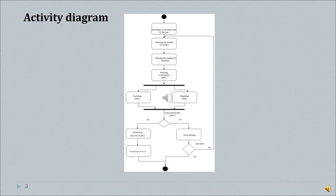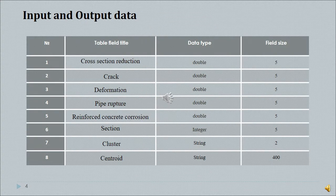An activity diagram shows the sequence of actions of the automated system and the division of sections into clusters. According to the results of the subject area analysis, the input data for the automated system includes the section number, cross-section reduction, cracks, deformation, pipe ruptures and reinforced concrete corrosion parameters. The output data includes the affiliation of the section with a particular cluster according to the appropriate parameters of its center.